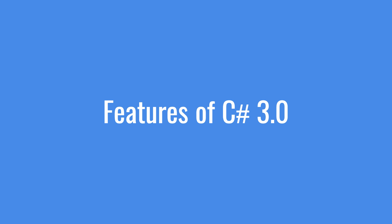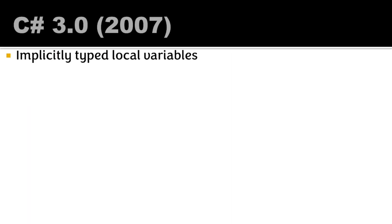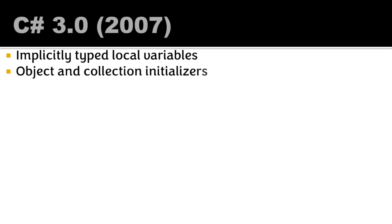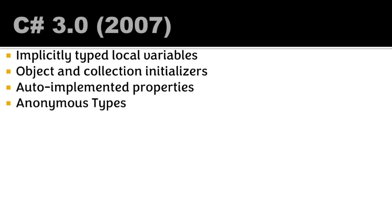Moving to 3.0, we had implicitly typed local variables — those declared without specifying a .NET type explicitly, using the 'var' keyword. We also had object and collection initializers, allowing values to be set when instantiating an object. Anonymous types were also introduced — types with no names.